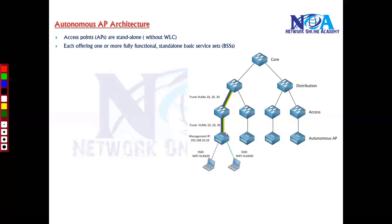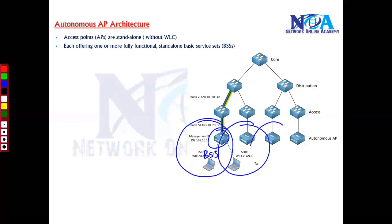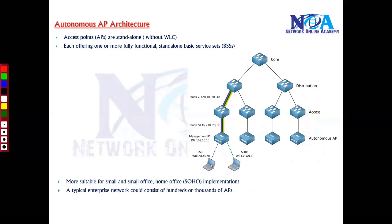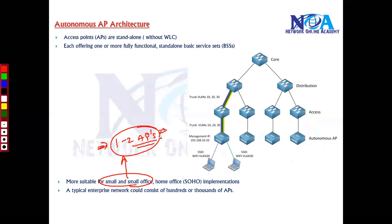With each access point you can create one Basic Service Set (BSS), and you can create multiple Basic Service Sets which form an Extended Service Set (ESS) when using multiple access points. This mode is more suitable for small office or home office implementations where you have one or two access points and want to cover a small area, or maybe a few more access points if needed.